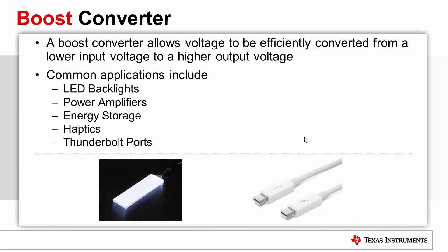The second and final switch mode power supply topology presented in this module is the boost converter. As previously described, the boost converter allows a DC input voltage to be efficiently converted to a higher output voltage. One common application is LED backlights, which typically have many series LEDs that require a high voltage to drive. Another is a last-gasp function for systems such as SSDs that require functionality for a short time after power loss in order to shut down in a controlled fashion. By storing holdup energy at a higher voltage than the bus voltage, the amount of capacitance can be reduced by up to 80 percent, significantly reducing solution size and cost while improving reliability.